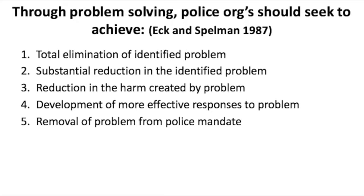Eck and Spellman talk about how police organisations should seek to achieve certain things if they're going through this problem-oriented approach. Number one: total elimination of the identified problem. Number two: substantial reduction in the identified problem. Number three: reduction in the harm created by the problem. Number four: development of more effective responses to the problem. Or number five: removal of a problem completely from a police mandate. That's a fairly big ask in a lot of ways depending on what the issue is, but at least one of those things should be on their list of things to achieve through this process.